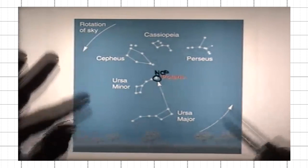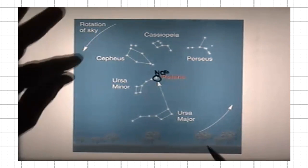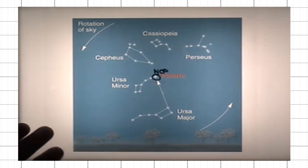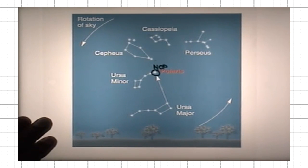As you can see, the stars in these constellations move in the counterclockwise direction as observed by us in the northern hemisphere.